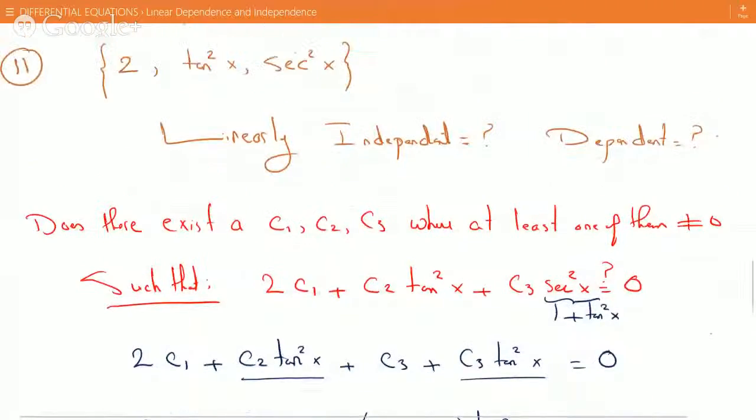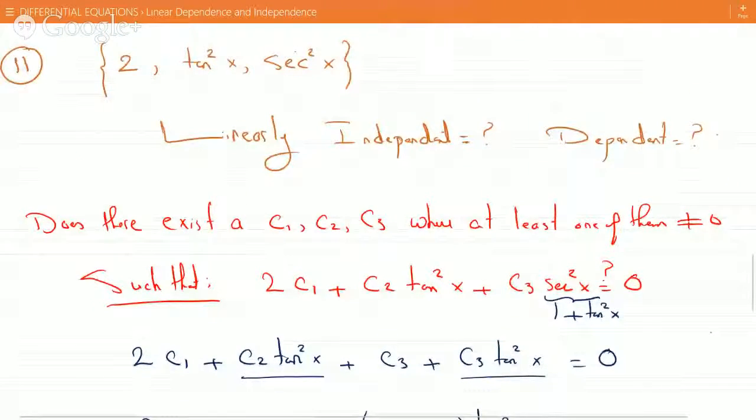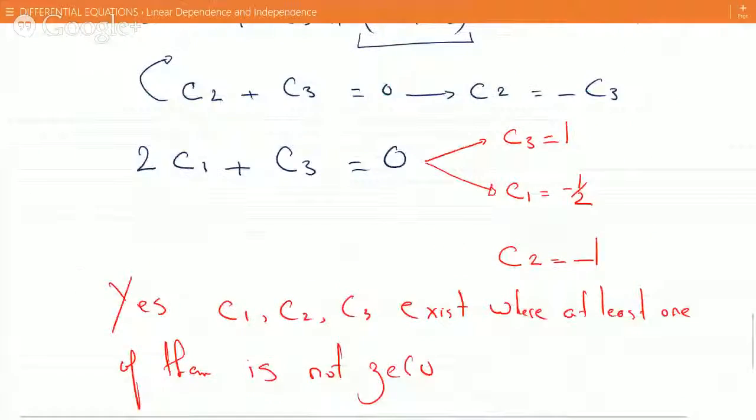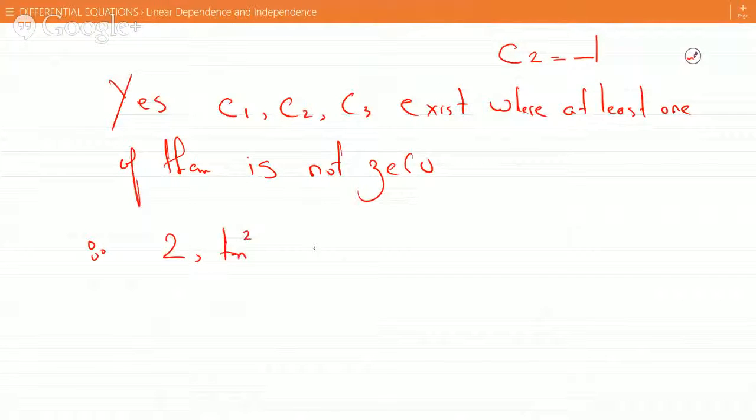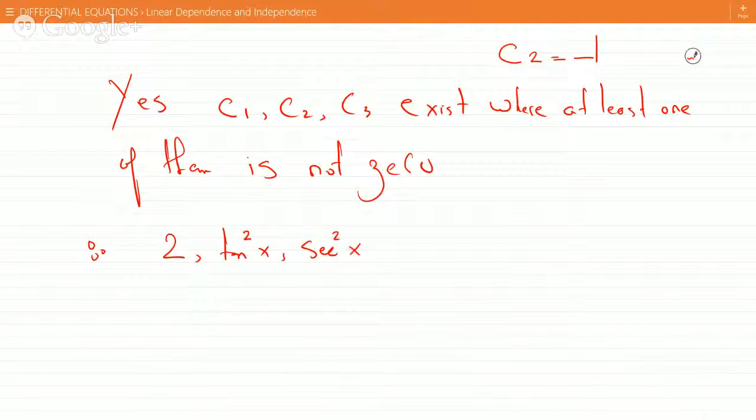Therefore the system is linearly dependent. So therefore the 2, tan squared x, and secant squared x are linearly dependent. The three functions are linearly dependent.